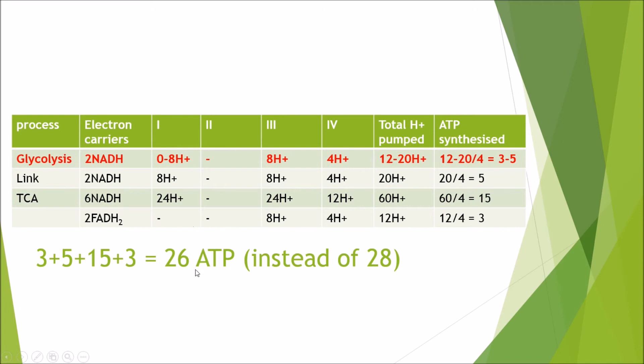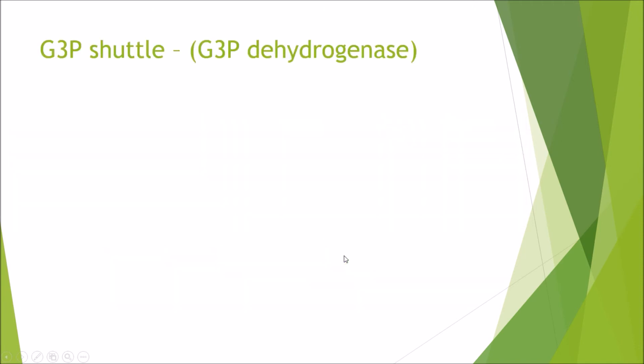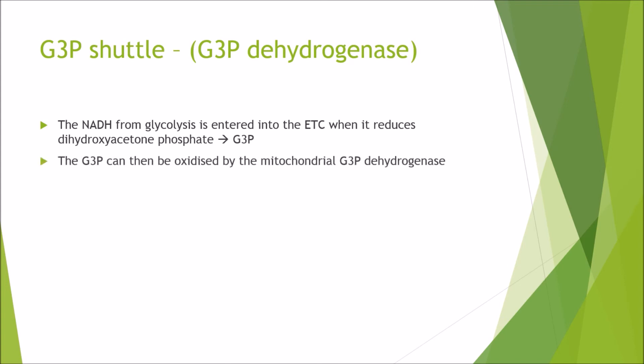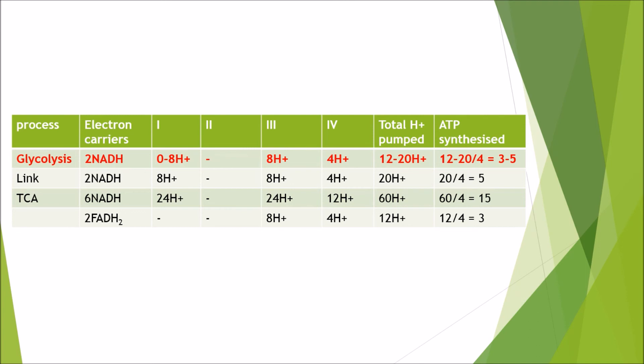So instead we get 26 ATP instead of 28. And the shuttle used is called the G3P shuttle or G3P dehydrogenase. NADH from glycolysis entered into the electron transport chain when it reduces dihydroxyacetone phosphate into glyceraldehyde-3-phosphate. The G3P can then be oxidized by the mitochondrial G3P dehydrogenase. And this process will reduce FAD into FADH2. So instead of the NADH going straight into the electron transport chain, it's bypassing complex 1. And instead it's using complex 2 and synthesizing FADH2. So the FADH2 will then follow along the electron transport chain pumping only six hydrogen ions in total. And there we go, that's the same table. So now you can see how it's bypassing complex 1 and it's actually entering in from complex 2.